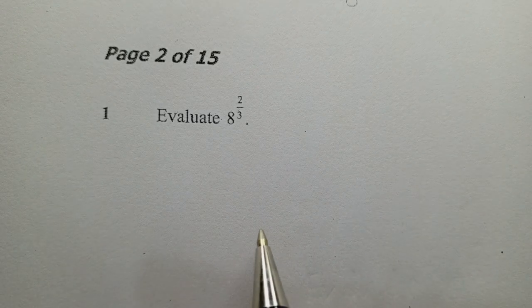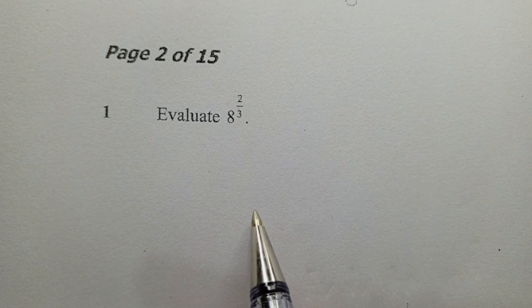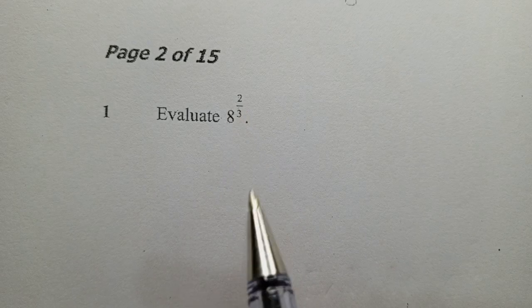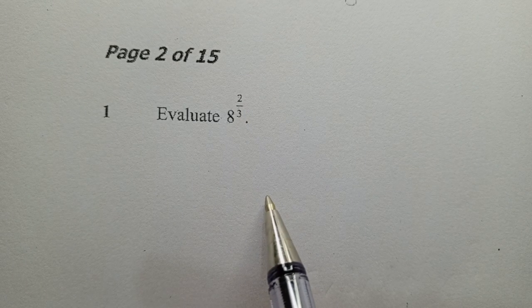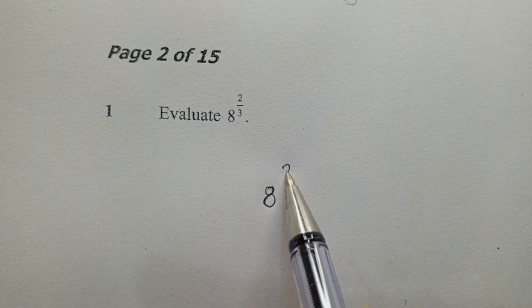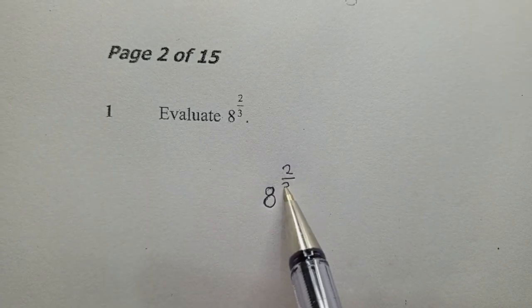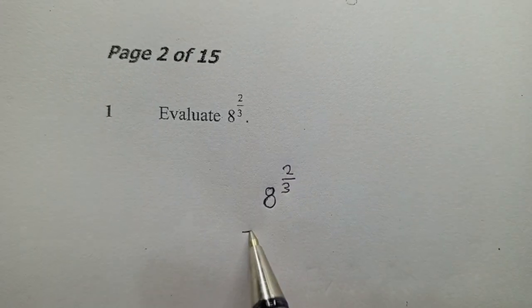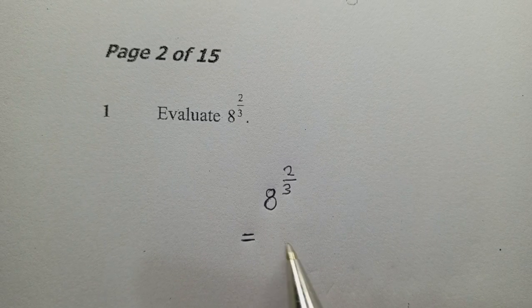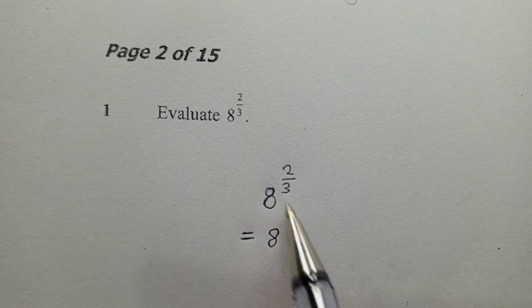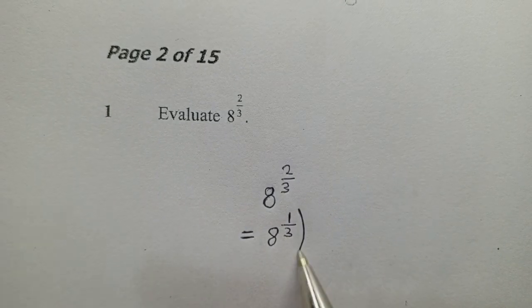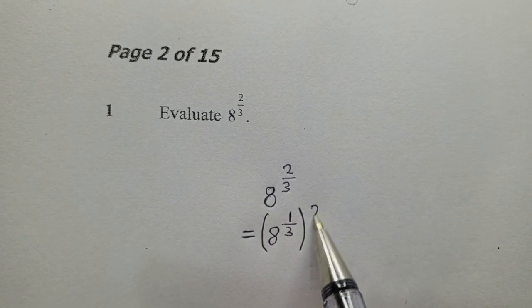So what you need to know here is that when you've got this power here, there are some steps that you need to perform. So here you say 8 power 2 over 3 will be equal to 8 power 1 over 3, and then to the power 2 right here.